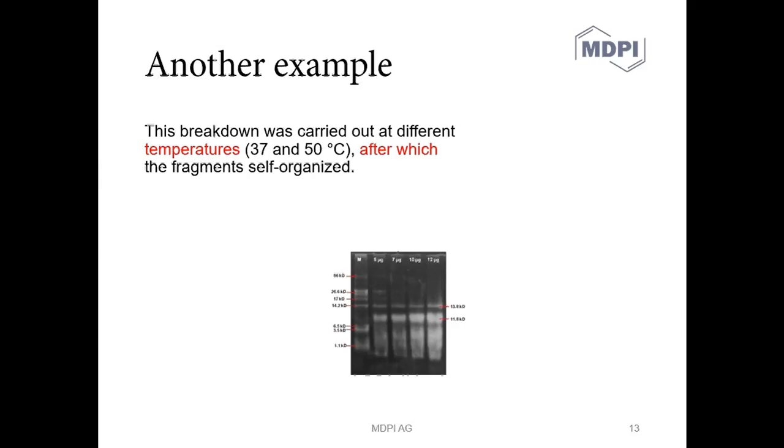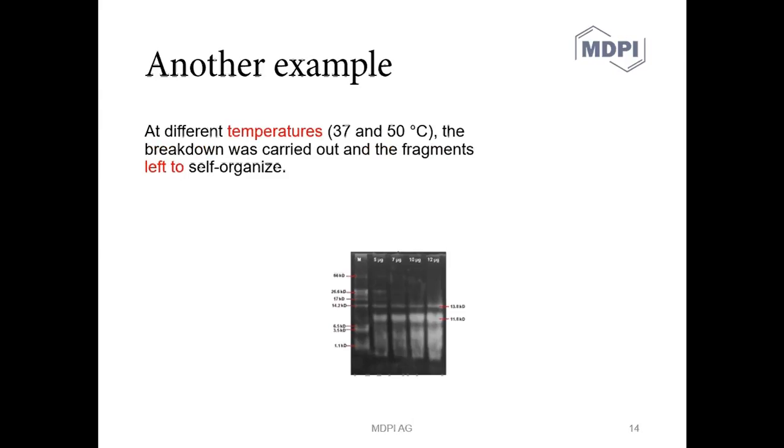So here's my first effort, this breakdown was carried out at different temperatures after which the fragment self organized. So now it's much simpler. We mentioned temperatures once and instead of allowing the fragments to self organize we just say after which they self organized. Now I edited this and then realized there's a slight problem because it's then not clear at which temperatures they self organized. So I thought I'm gonna rephrase it a little bit and let's stick the temperatures at the beginning. So at different temperatures 37 and 50 degrees C the breakdown was carried out and the fragments left to self organize. So we've now actually gone back to modify the sentence structure a little bit. Taken out some of the words and hopefully it's a little bit clearer what's going on.